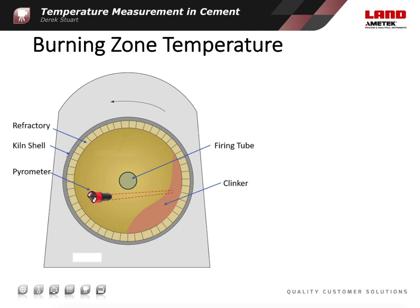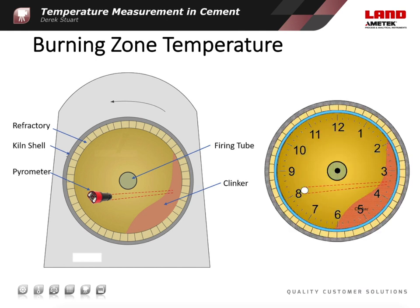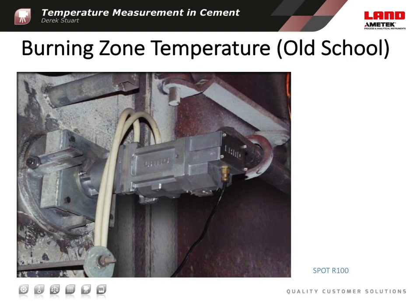Combined with a peak picker algorithm, a ratio thermometer can give an accurate temperature measurement even when there's 95% obscuration in the field of view. A viewing port within the firing hood, located below and to the side of the burner, allows the best measurement of the clinker temperature in the burning zone. If the kiln rotates anti-clockwise, the best location is around eight o'clock, with the pyrometer pointing across and towards the half past three position. The pyrometer generally has to be installed with a water-cooled jacket to prevent damage to the electronics. An air purge is essential on the process connection to protect the delicate optical surfaces from the hot and dusty gases within the kiln.